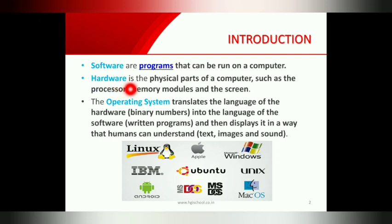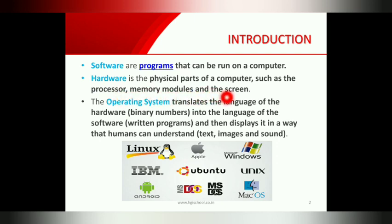Then comes hardware. Hardware is the physical part of a computer — the physical parts that you can touch. These include processors, memory modules, the screen, mouse, keyboards, etc.